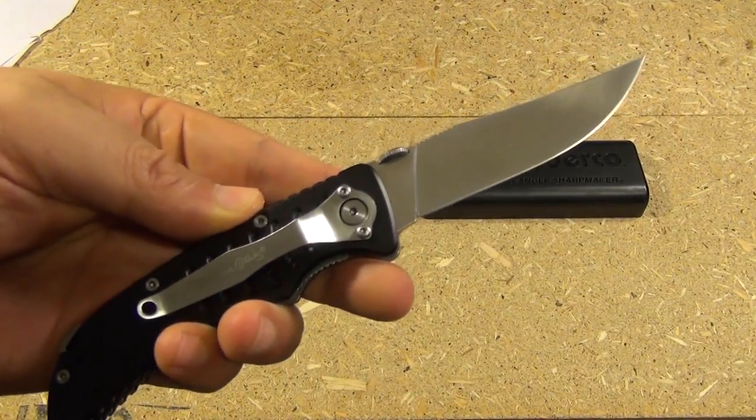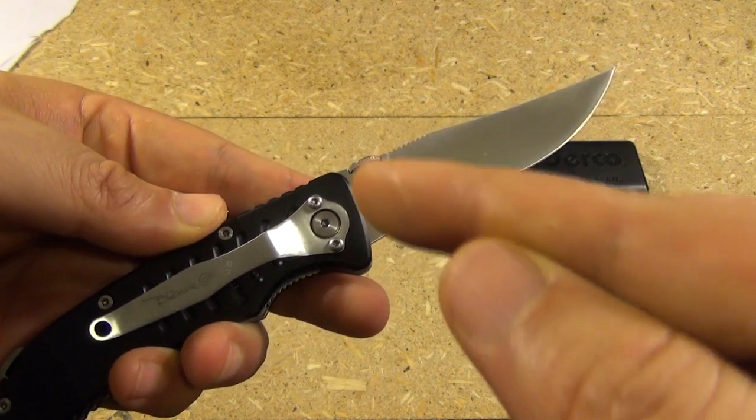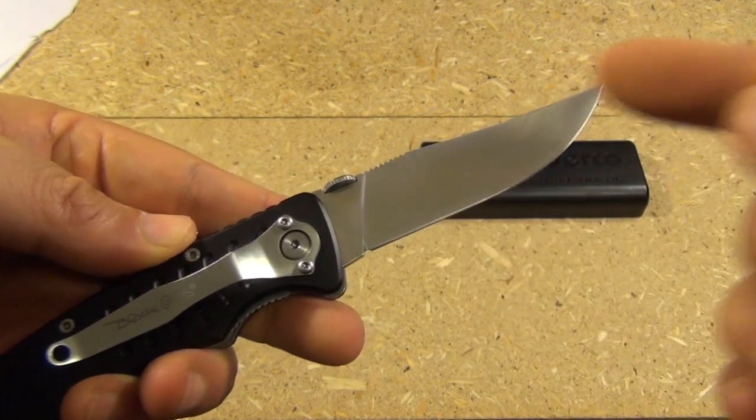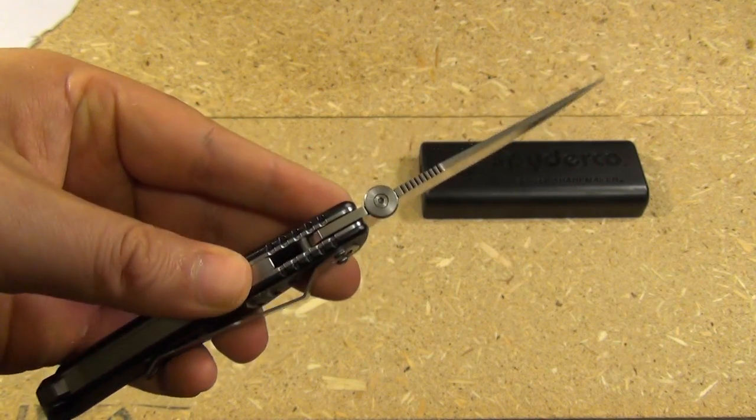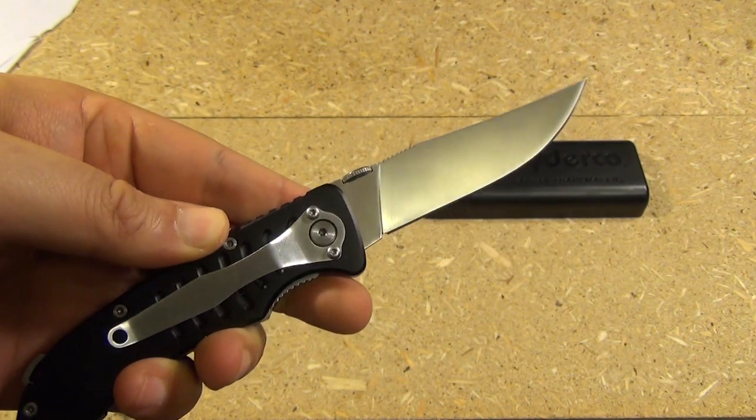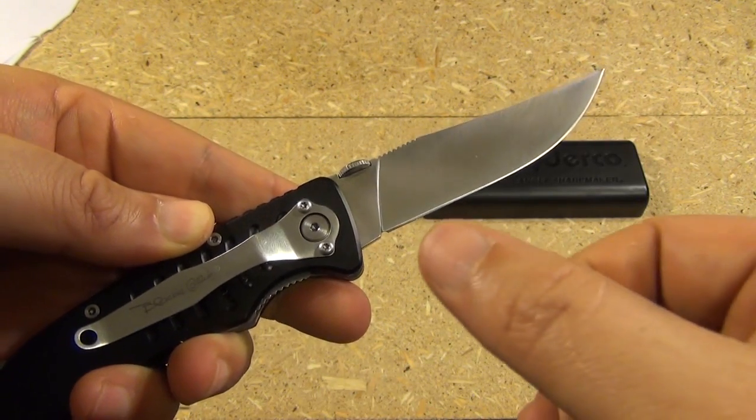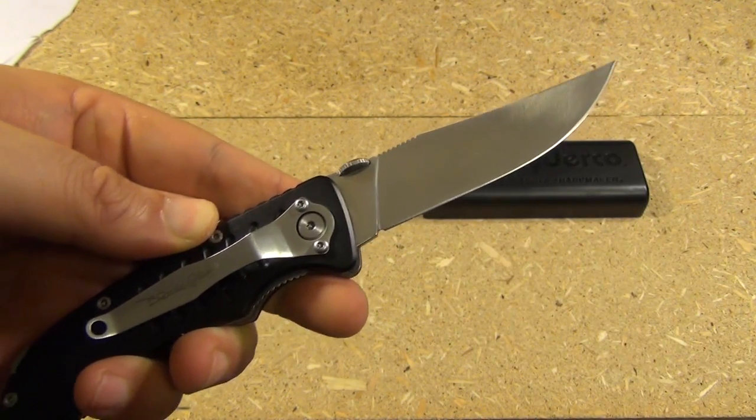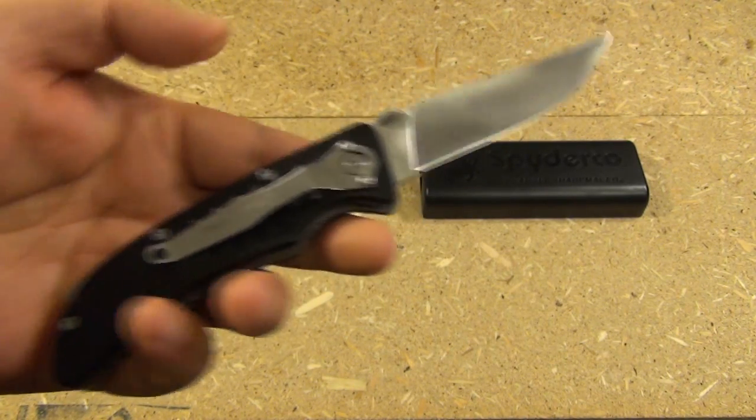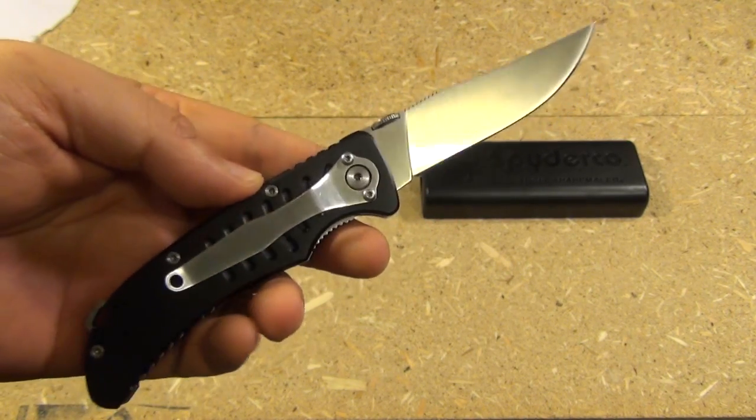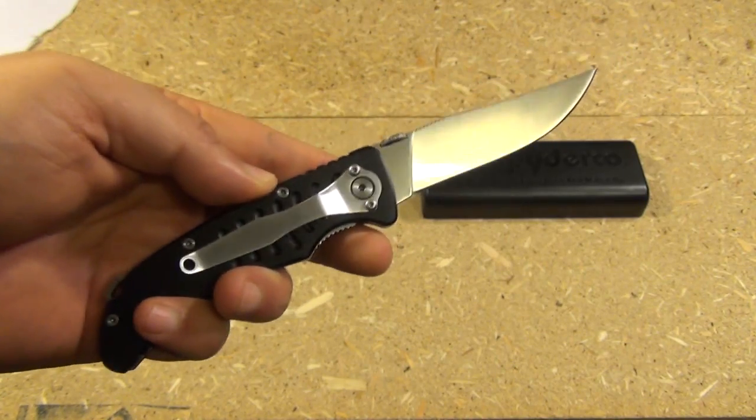The Sharp Maker is especially good at sharpening knives with this type of geometry, which as you can see, it's a full flat grind. It's very thin. Clip point, and then the bevel is not very tall at all. It's almost like a kitchen knife. The Spyderco Sharp Maker will make something like this uber sharp.